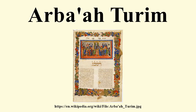The Arba'ah Turim, as the name implies, consists of four divisions, which are further organized by topic and section. The four Turim are as follows.